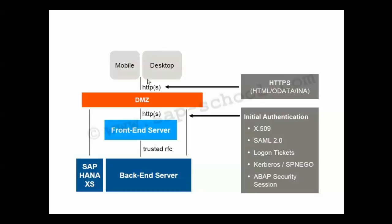The top layer includes mobile and desktop — this is the external environment from where the application is accessed. After that, we have the DMZ layer, and after the DMZ we have the server zone, which contains our front-end server as well as our back-end server. Sometimes the server may be split into one or more DMZ layers — an inner DMZ or an outer DMZ — and there could also be secure server zones. As a thumb rule, we consider at least four network layers.